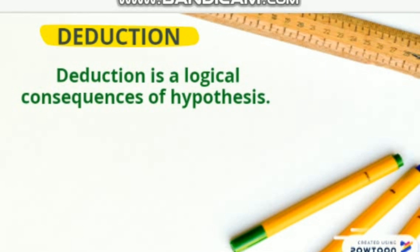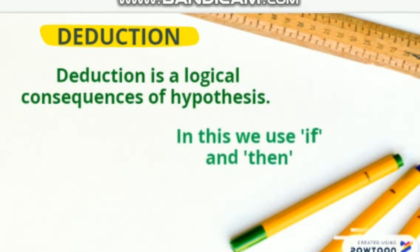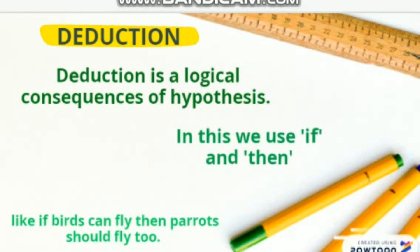Now let's study deduction. Deduction is a logical consequence of a hypothesis — a statement drawn from the hypothesis. It is a conclusion made in the mind. While making a deduction, we use 'if' and 'then'. For example: if the birds can fly, then parrots should fly too. We have used 'if' and 'then' in this statement.